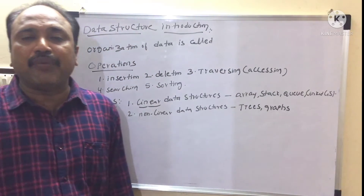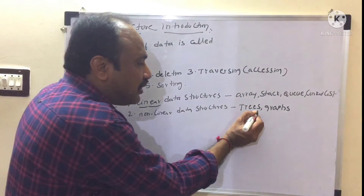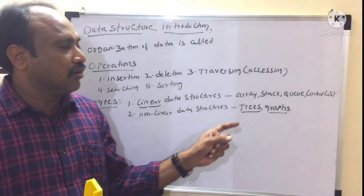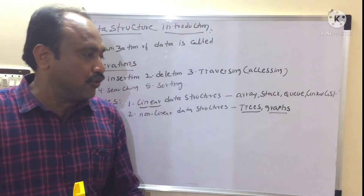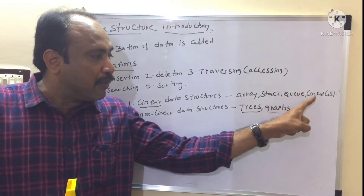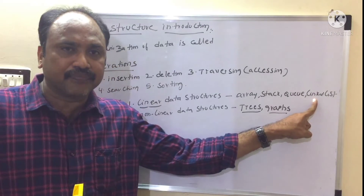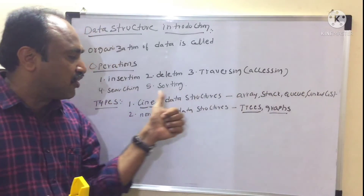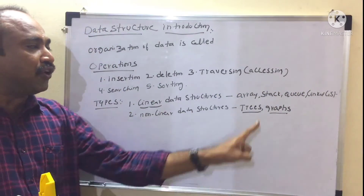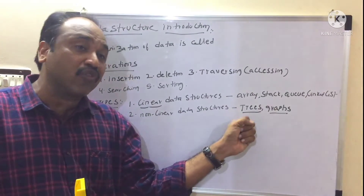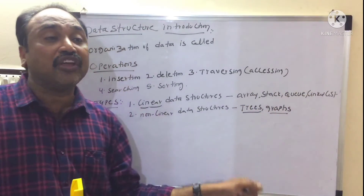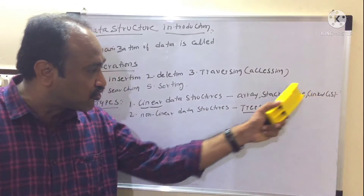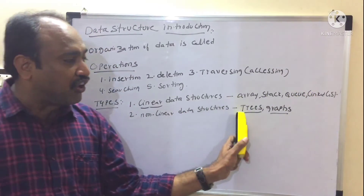Now some of you may raise a doubt: sir, while implementing trees and graphs — those who have knowledge on trees and graphs — you may raise the doubt that trees and graphs are also implemented using linked list. Then in this case, why are you calling linked list a linear data structure? When I am going to implement trees and graphs, we are going to use linked list only. Then why are you calling it non-linear?